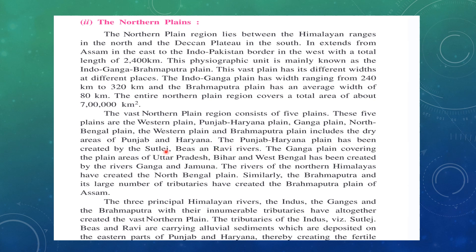The Punjab-Haryana plain was created by the tributary rivers of the Indus — Satlaj, Beas, and Ravi. The Ganga plain, which covers states like Uttar Pradesh, Bihar, and West Bengal, has been created by the rivers Ganga and Yamuna. The rivers of the northern Himalayas, mainly the Tista river, created the North Bengal plain — basically the Siliguri and Jalpaiguri area. Similarly, the Brahmaputra and its large number of tributaries have created the Brahmaputra plain in Assam.